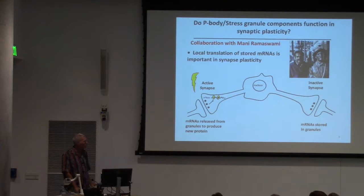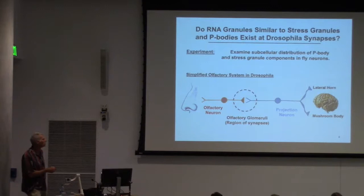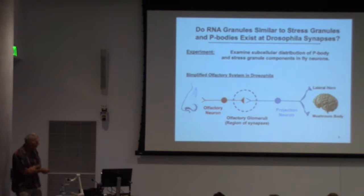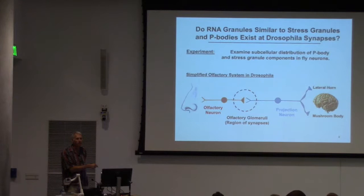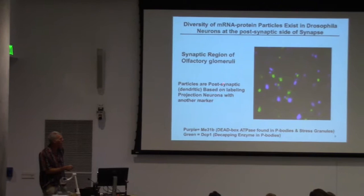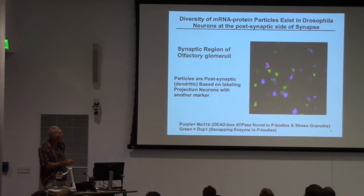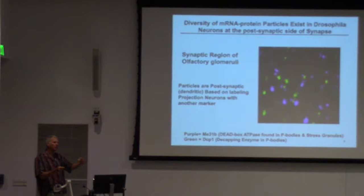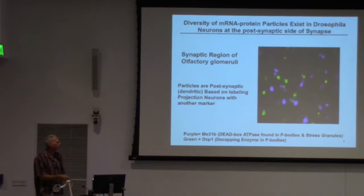Many years ago, Mani and I started talking about this being through RNP granules. These experiments are all done in Drosophila. All you need to know about Drosophila today is that they have a nose, a brain, and in between is a region called the olfactory glomeruli where olfactory neurons synapse on projection neurons that go to the brain. This region is just synapses—no cell bodies. The first question we asked was: in this region of synapses, are there RNA granules? And in fact, if you stain that region with markers for P bodies or stress granules, you can see lots of these granules, all on the dendritic side.